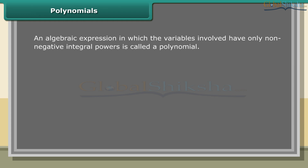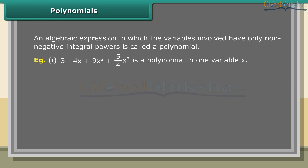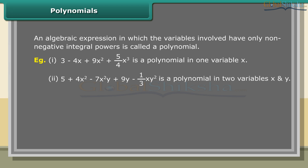Polynomials: an algebraic expression in which the variables involved have only non-negative integral powers is called a polynomial. Example 1: 3 minus 4x plus 9x² plus 5/4x³ is a polynomial in one variable x. Example 2: 5 plus 4x² minus 7x²y plus 9y minus 1/3xy² is a polynomial in two variables x and y.